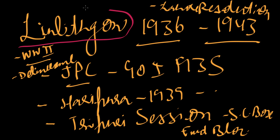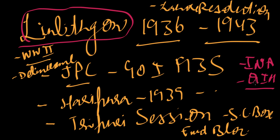Subhas Chandra Bose formed the INA during the time of Lord Linlithgow. The Quit India Movement also happened at this time — an important exam question is: who was the Governor General when the Quit India Movement happened? The answer is Linlithgow. The Gowalia Tank launch of Quit India, the 'Do or Die' slogan, and the August Revolution all happened under him. The Karachi session of the Muslim League, with its call for 'Divide and Quit,' also occurred under Linlithgow.